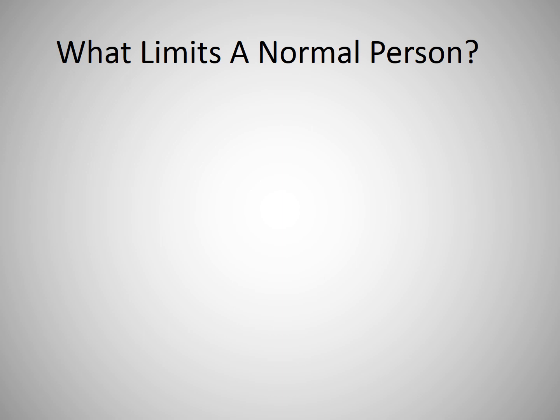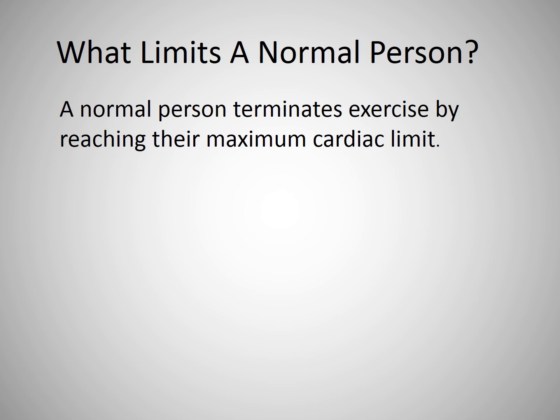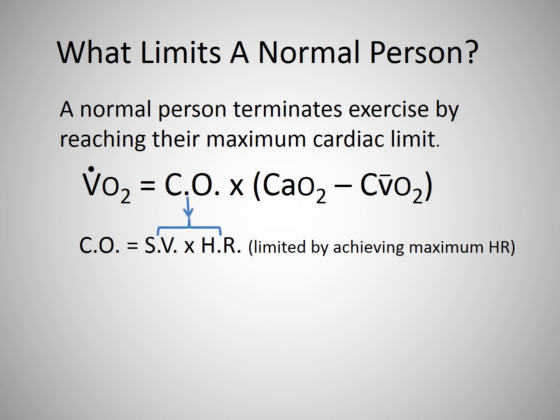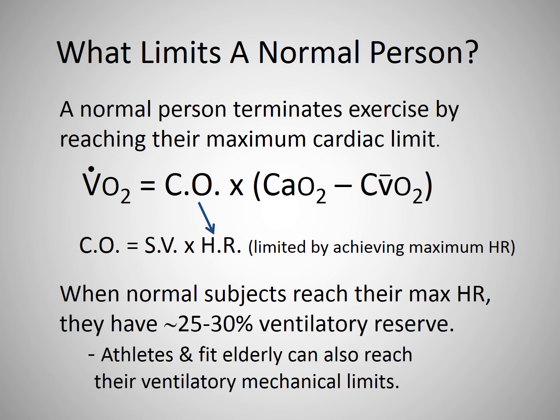Before one can understand what is abnormal, we need to understand what physiologically limits a normal subject. When a healthy person exercises to the level where they feel they are unable to go any further, it is usually due to reaching a cardiac output limitation. Going back to the Fick equation, cardiac output is determined by stroke volume times heart rate, which is why cardiologists use the maximum predicted heart rate to determine if a patient gave a good effort. When a normal subject reaches their cardiac limit, they will have around 25 to 30 percent of their ventilatory reserve remaining. Well-trained athletes can keep pushing on when reaching their cardiac limit, using up that ventilatory reserve trying to buffer the increasing excessive metabolic lactate acidosis — blowing their CO2s down into the low 20s or high teens with extremely low pHs in the 7.2 range. Also, fit elderly subjects can use up their ventilatory reserve and reach their ventilatory mechanical limits.